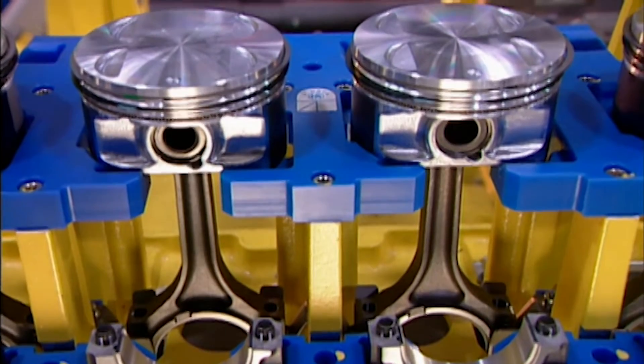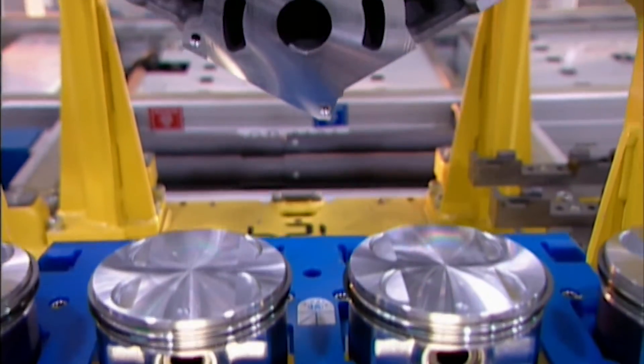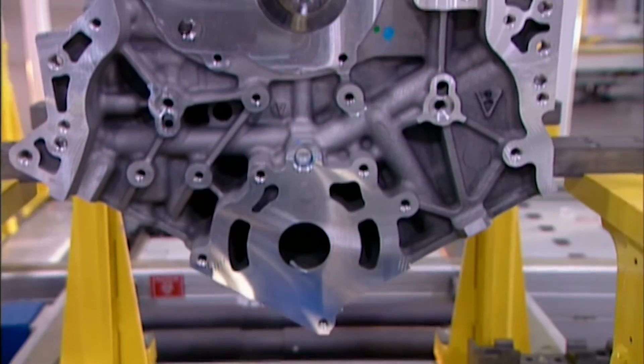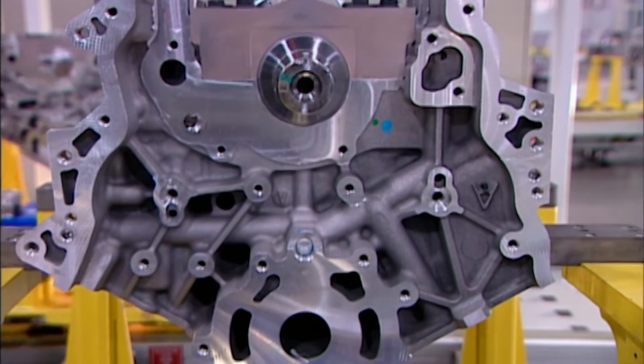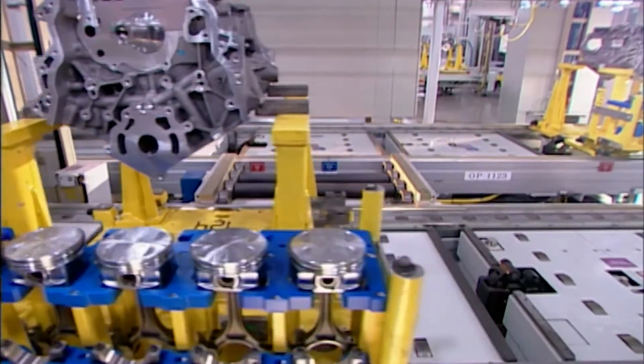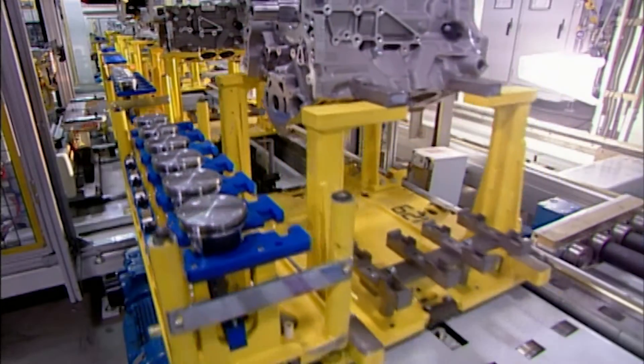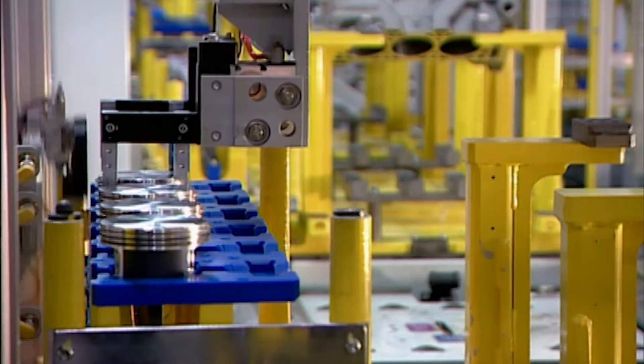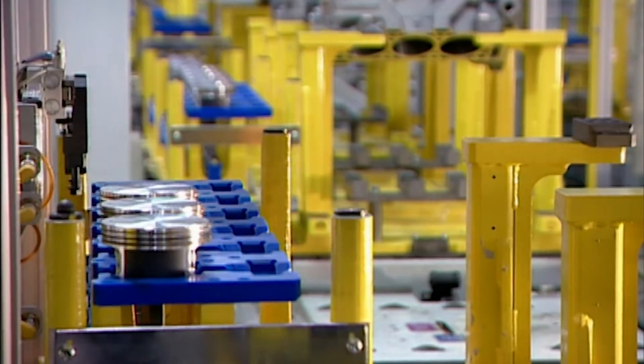The pistons come next, six, because these are six cylinder engines. The pistons are made of aluminium. Robots install them into the cylinder bores of the engine block. A steel connecting rod attaches each piston to the crankshaft.